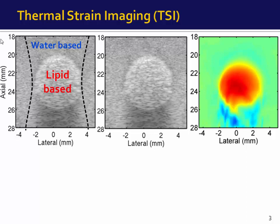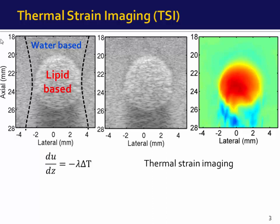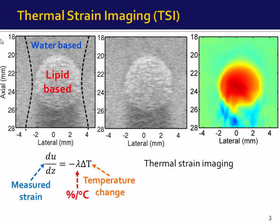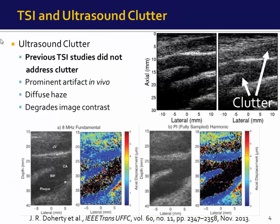By tracking these shifts and calculating the strain, we can create a strain map in which positive red strain corresponds to lipid-based regions and negative blue strain corresponds to water-based regions. The governing equation for TSI is that the measured strain equals minus the sound speed coefficient times temperature change, where the sound speed coefficient is the percentage change in sound speed per degree Celsius.